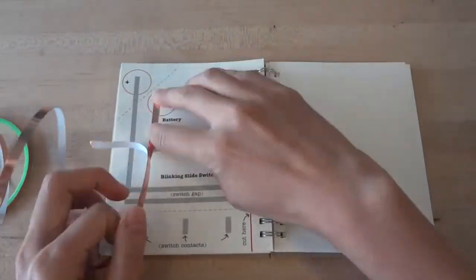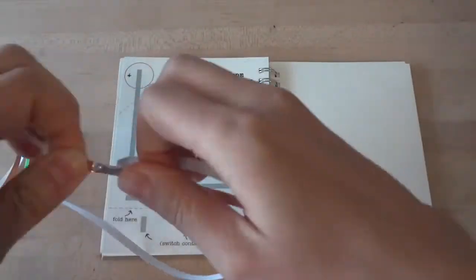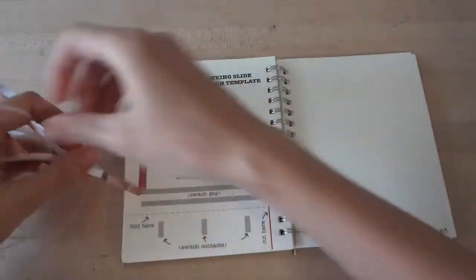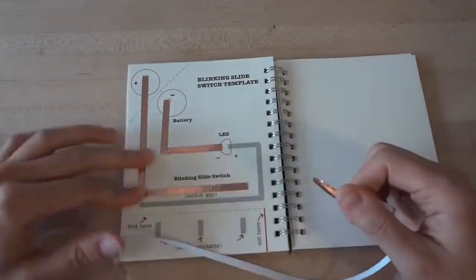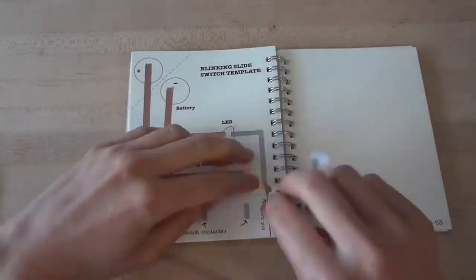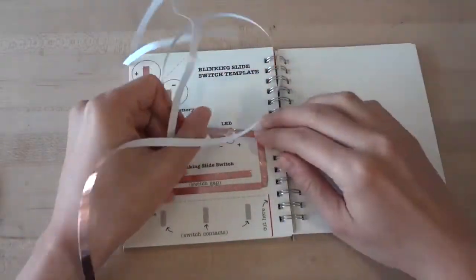First, stick your copper foil over the gray lines on the top of the template. Remember to use continuous pieces of foil for each gray line and to fold at the turns. Watch your fingers as the tape can be sharp.